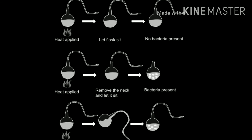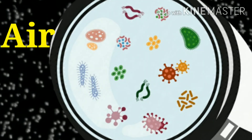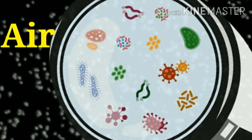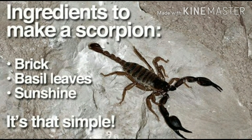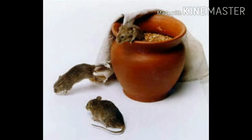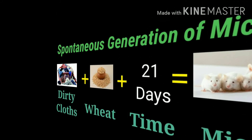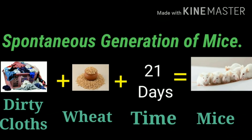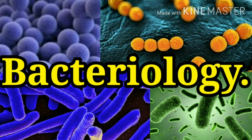Thus, he brought solid evidence that the air contains microbes that contaminate broth. This marked the end of the two-millennium-old theory of spontaneous generation. He not only settled the philosophical problem of the origin of life at the time, but also placed on solid ground the new science of bacteriology, which relied on proven techniques of sterilization and aseptic manipulation.